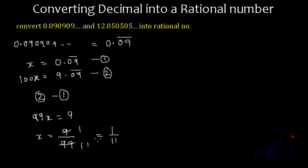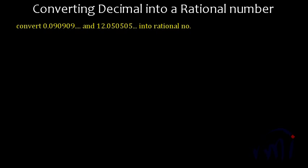And now we will tackle the second question. The second question is slightly different. Here we have to convert 12.0505 where 05 is recurring infinite times. So it can be written as 12.05 with a bar over both 0 and 5. So what do we do? Yes, again we will assume this 12.05 where 05 is recurring as x.